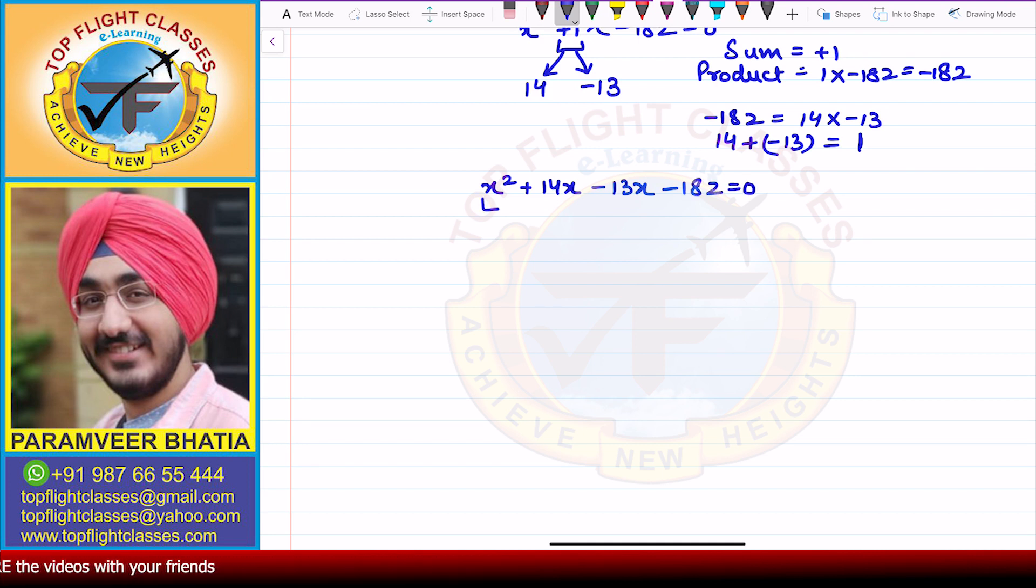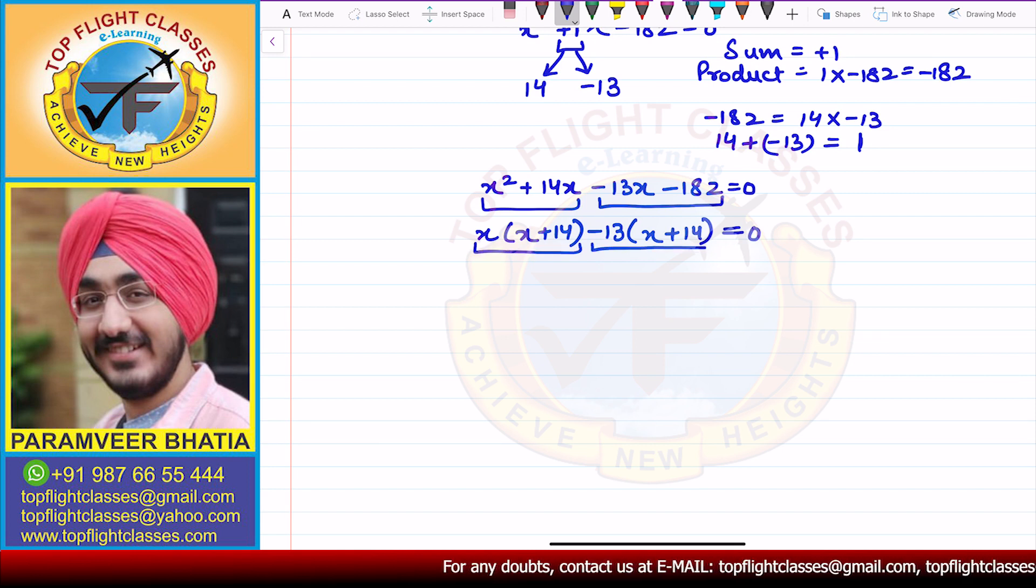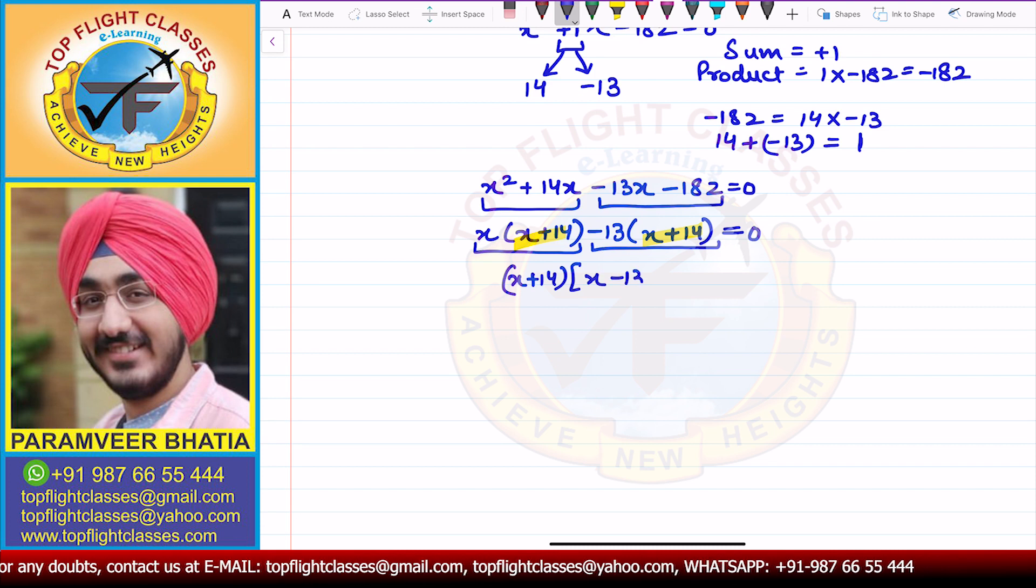So here, from the first two terms, I can take x common out. I will get x plus 14 in the bracket. And the last two terms, I can take minus 13 common out. I will get x plus 14 in the bracket, which is equal to 0. So here, in these two terms, you can clearly see that x plus 14 is common. So I will take x plus 14 common out. In the bracket, I will get x minus 13.